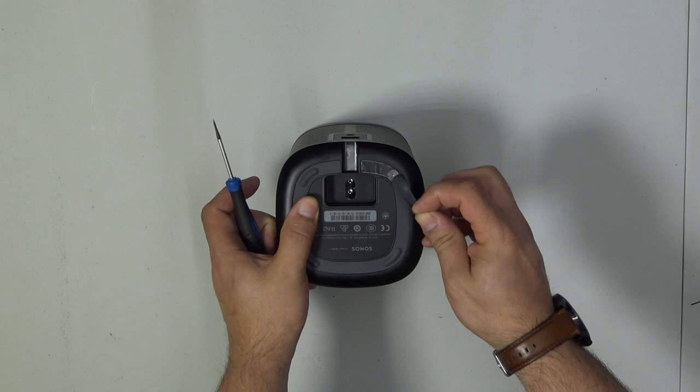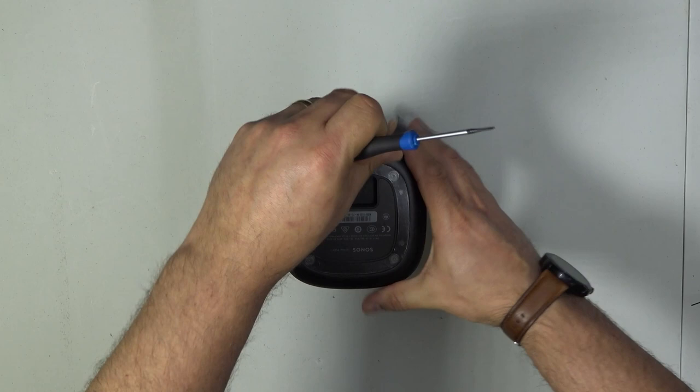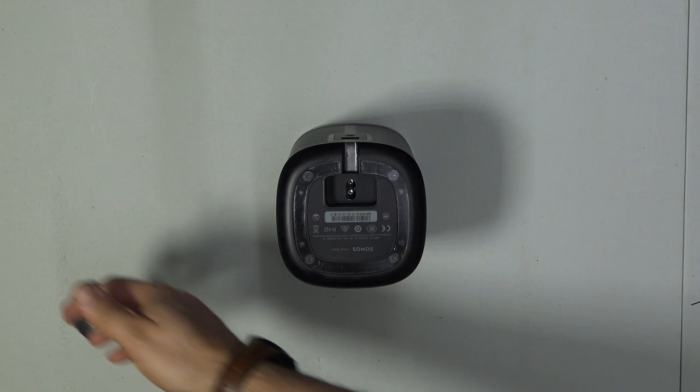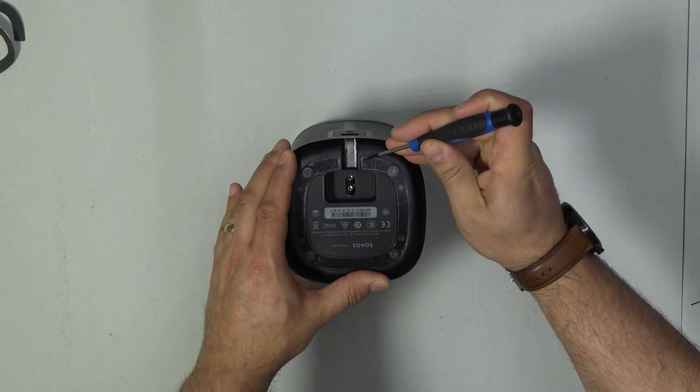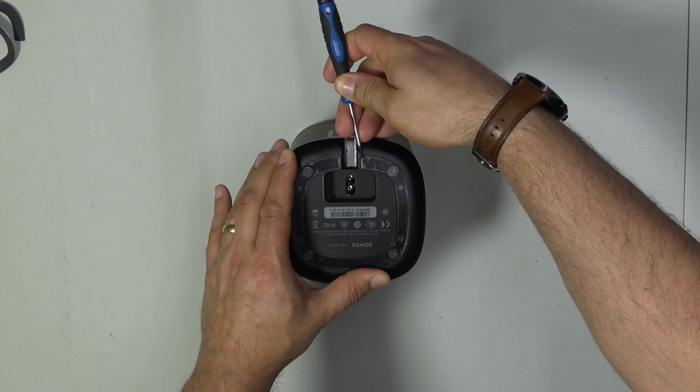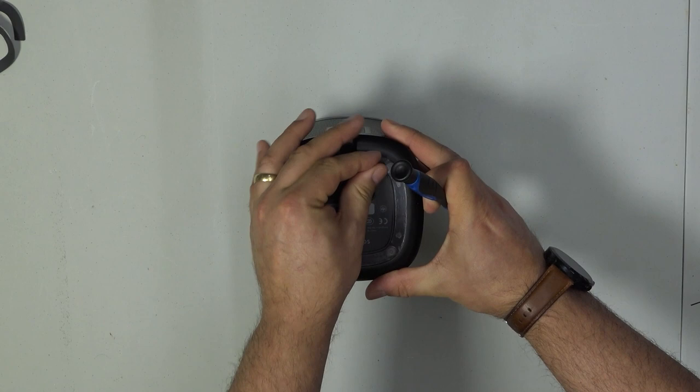Access to the screws for the base of the Sonos One are located underneath the little rubber sticky pads. Underneath those pads there's also a plastic sticky pad. I'm sort of finding this out as I go along here, so you'll have to bear with me a little bit. I've tried to fast forward through the boring parts.